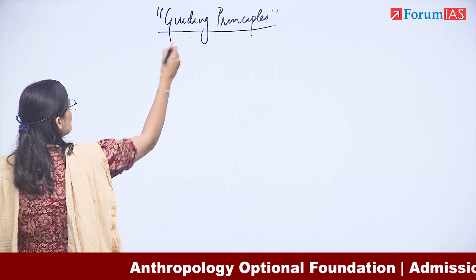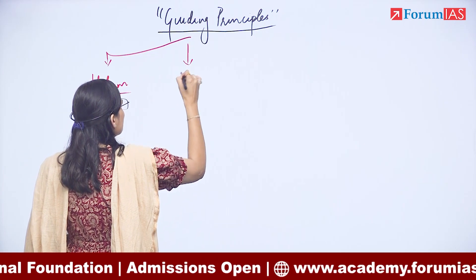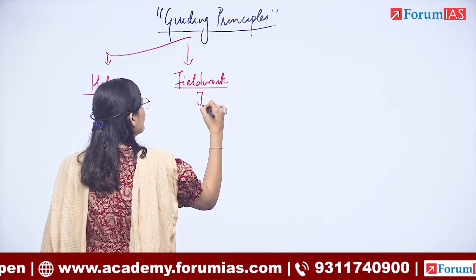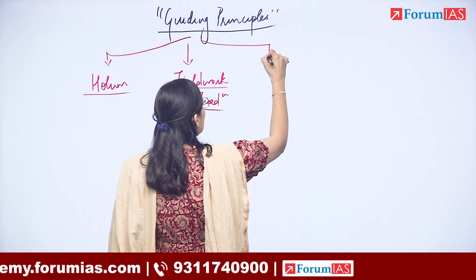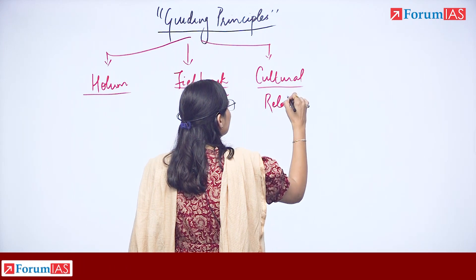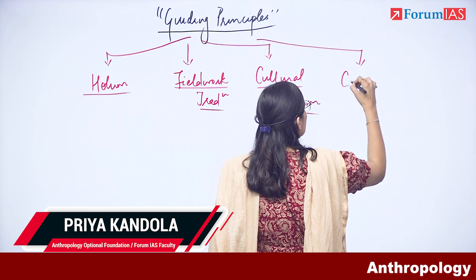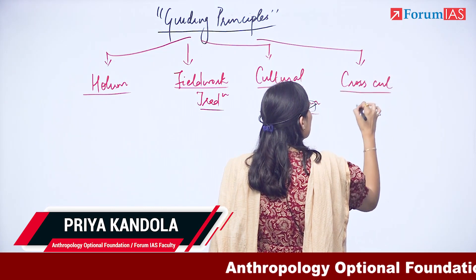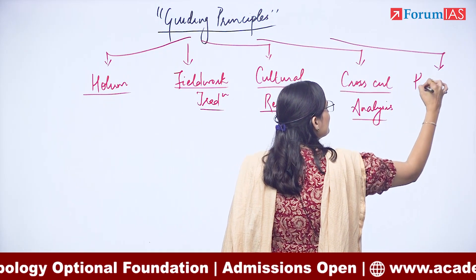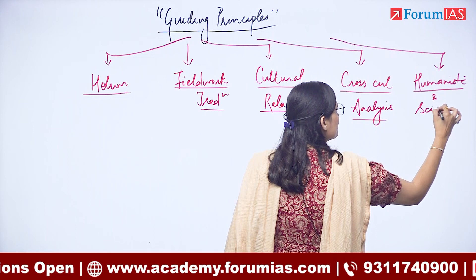The first parameter is called Holism. The second one is called Fieldwork Tradition. The third one is called Cultural Relativism. The fourth one is called Cross-Cultural Analysis. And the fifth one is Humanistic and Scientific Approach.